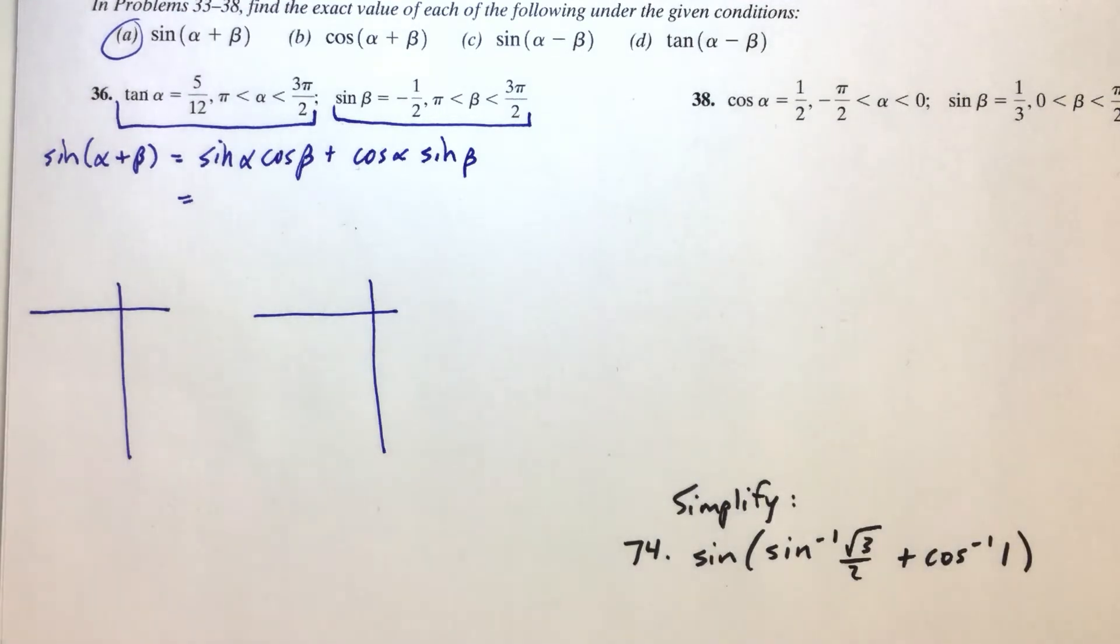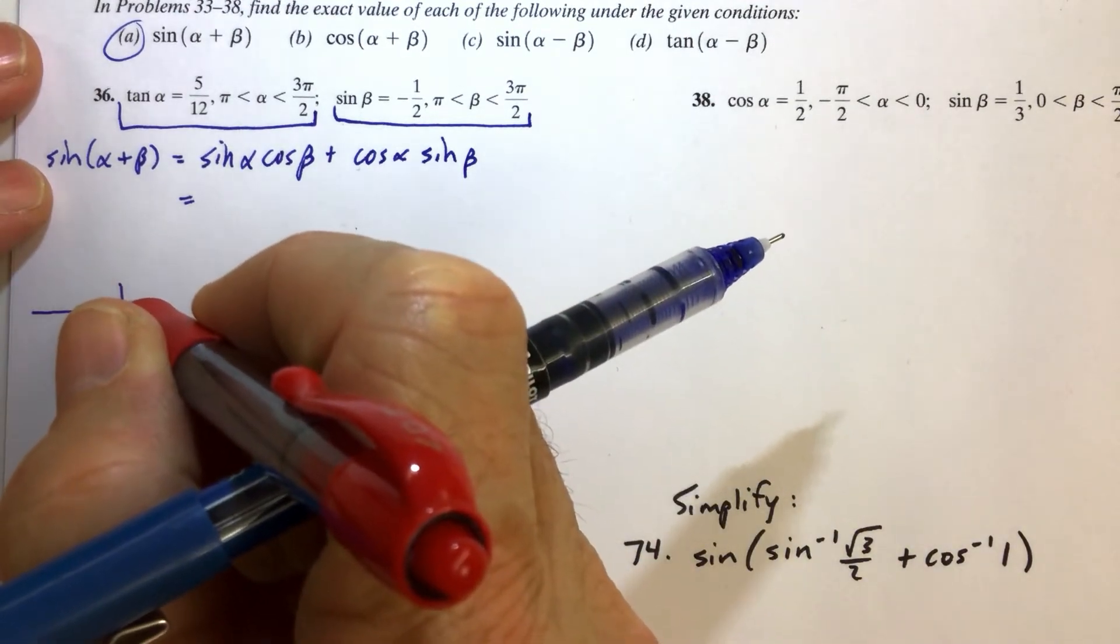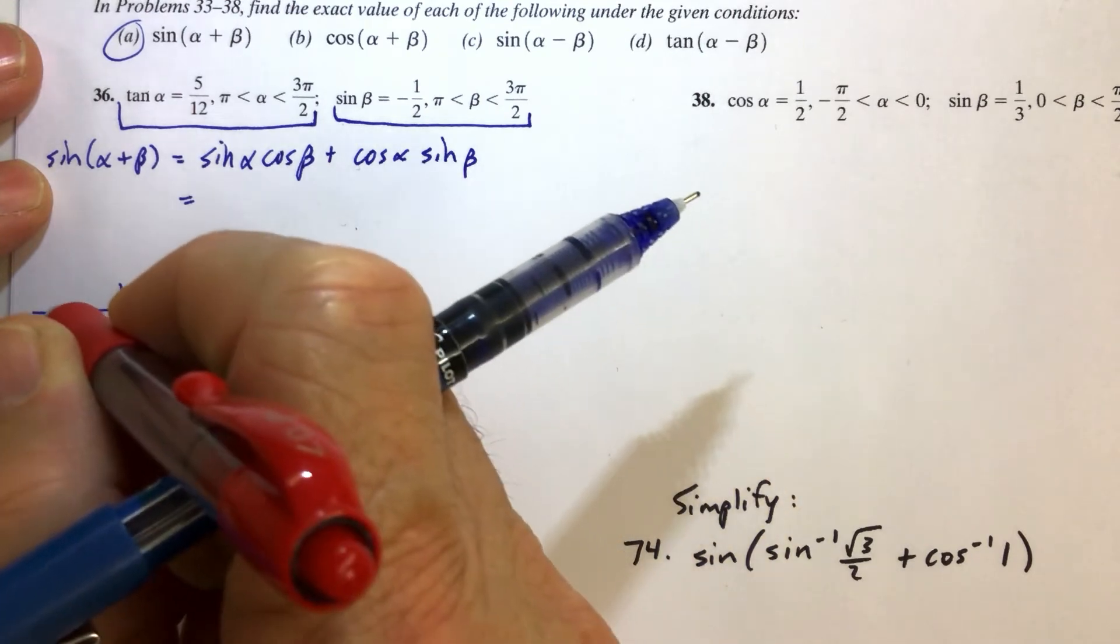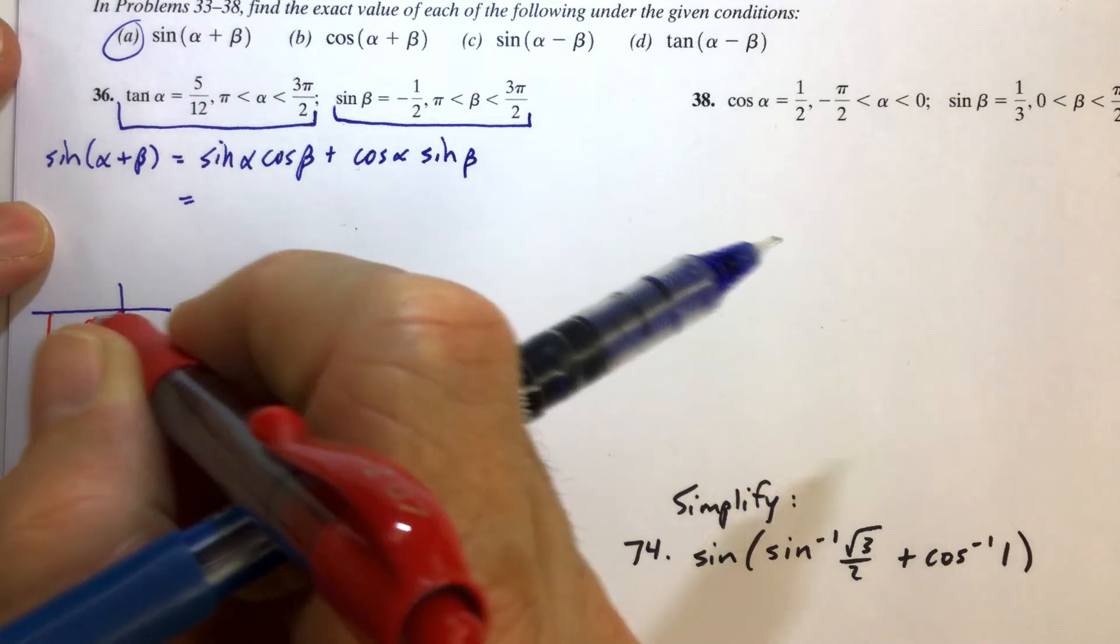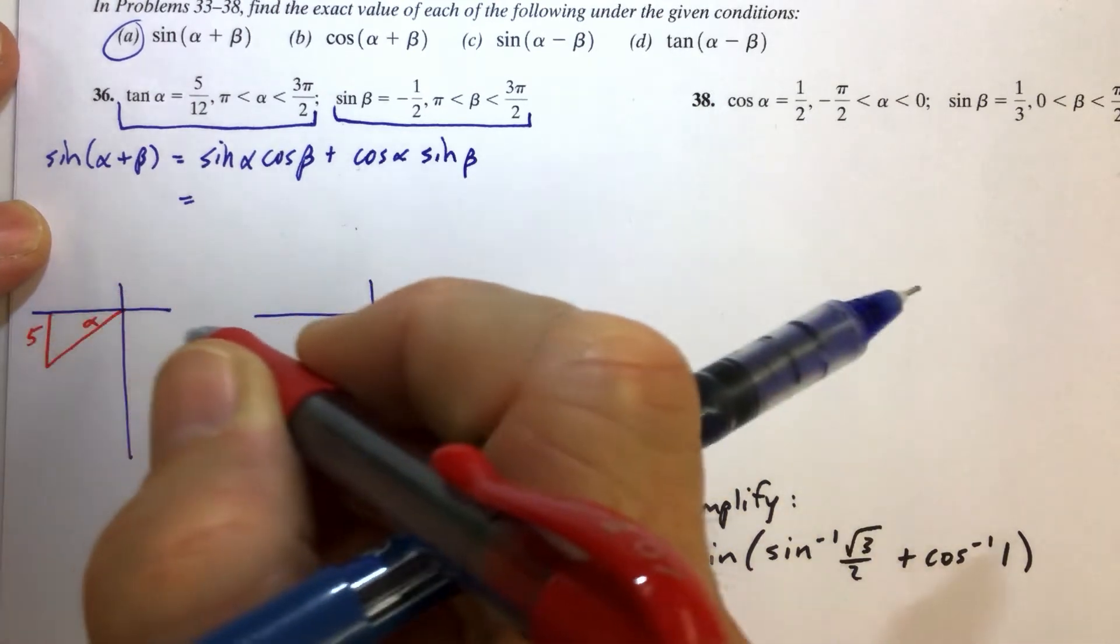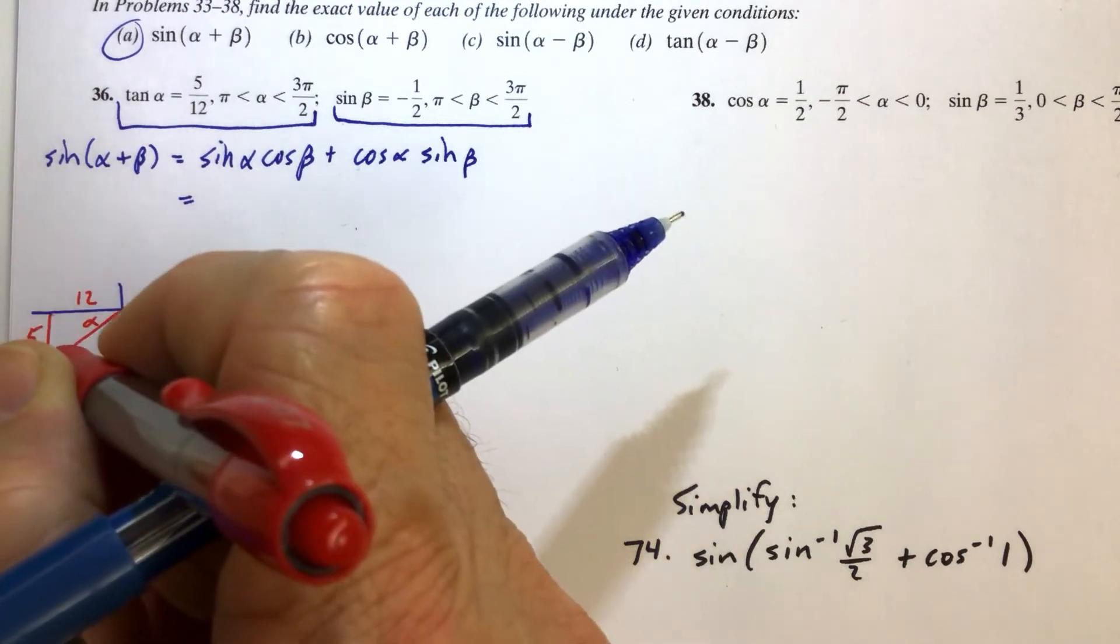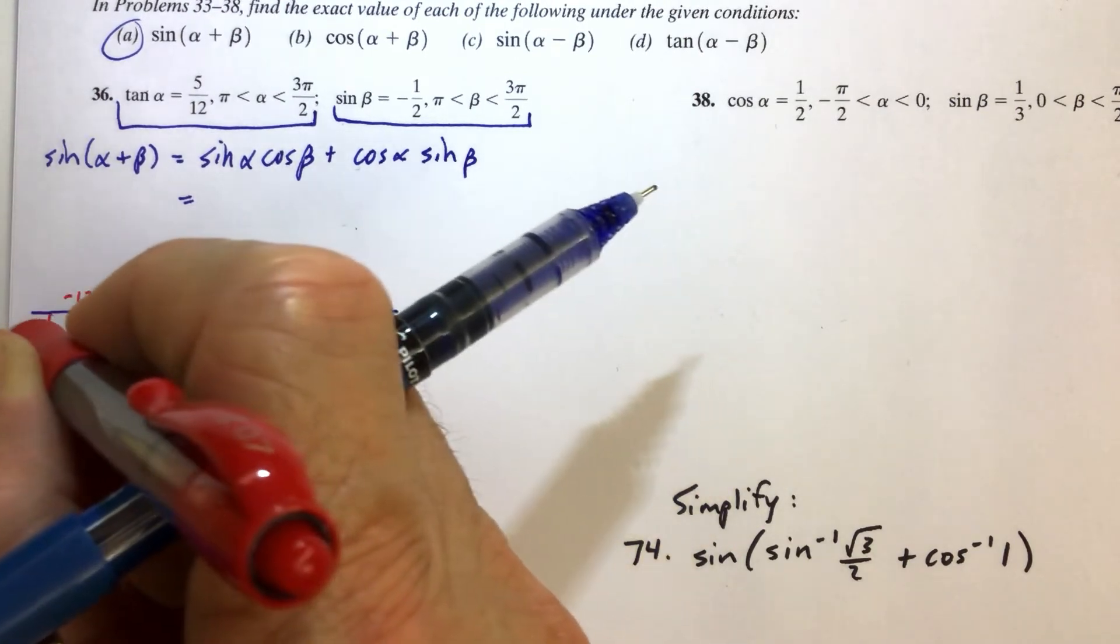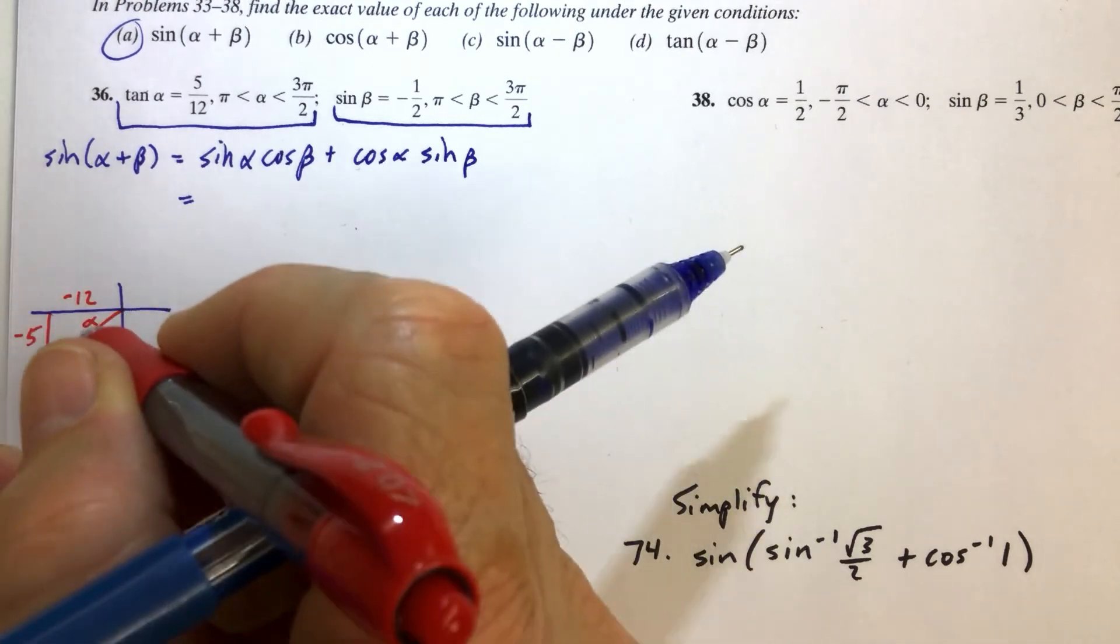We're going to put alpha over here in the third quadrant, and the tangent of alpha is 5 over 12. Remember, the tangent is the opposite over the adjacent, and the opposite leg would be 5, and the adjacent leg would be 12. If we think of these numbers as coordinates, it's super helpful to then not miss a minus sign.